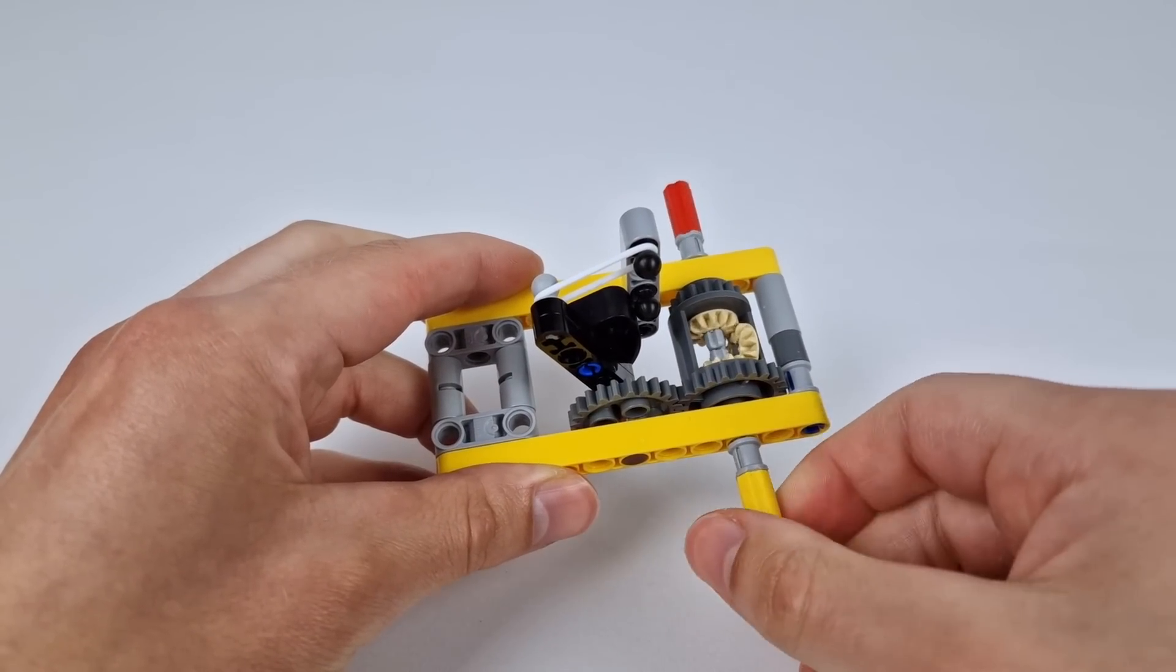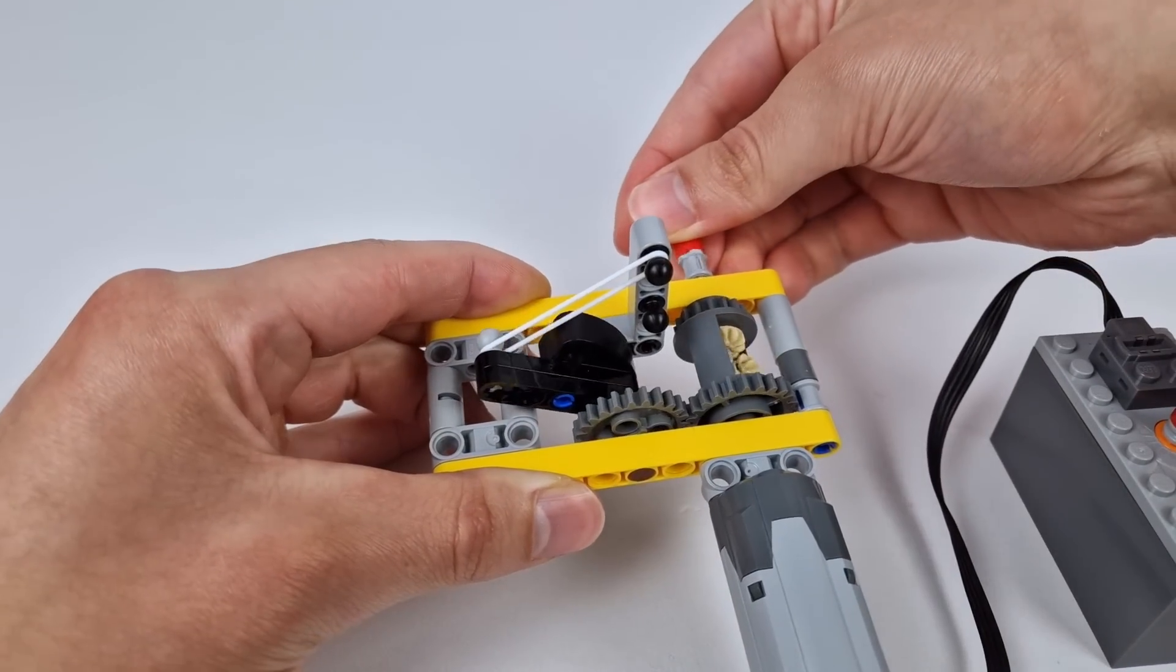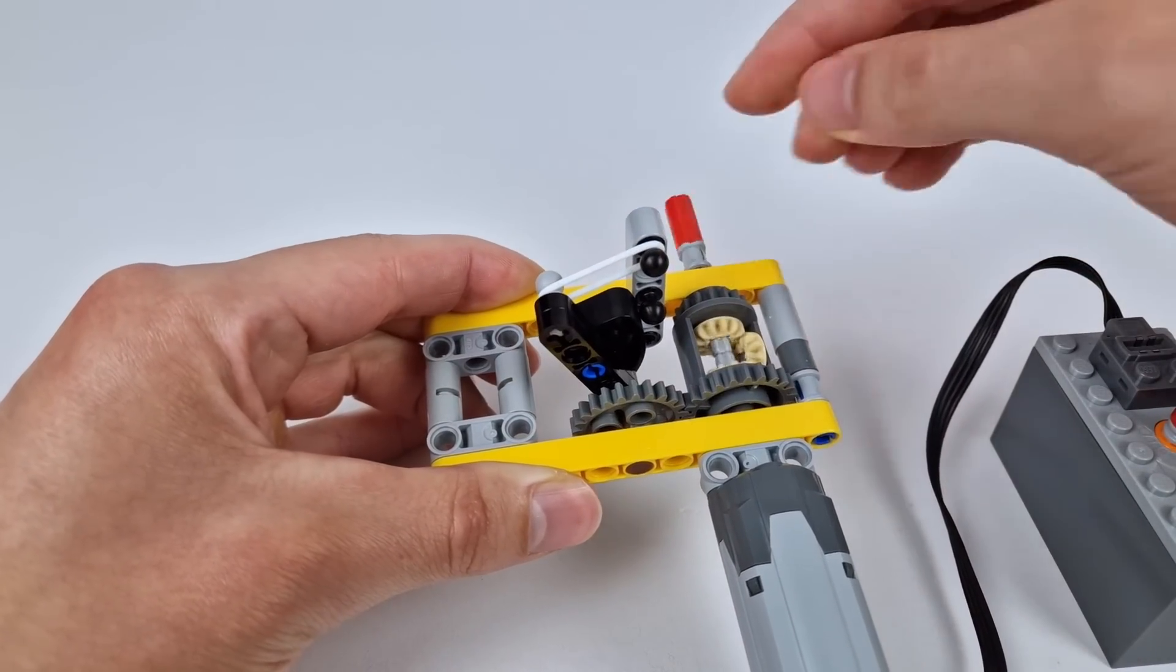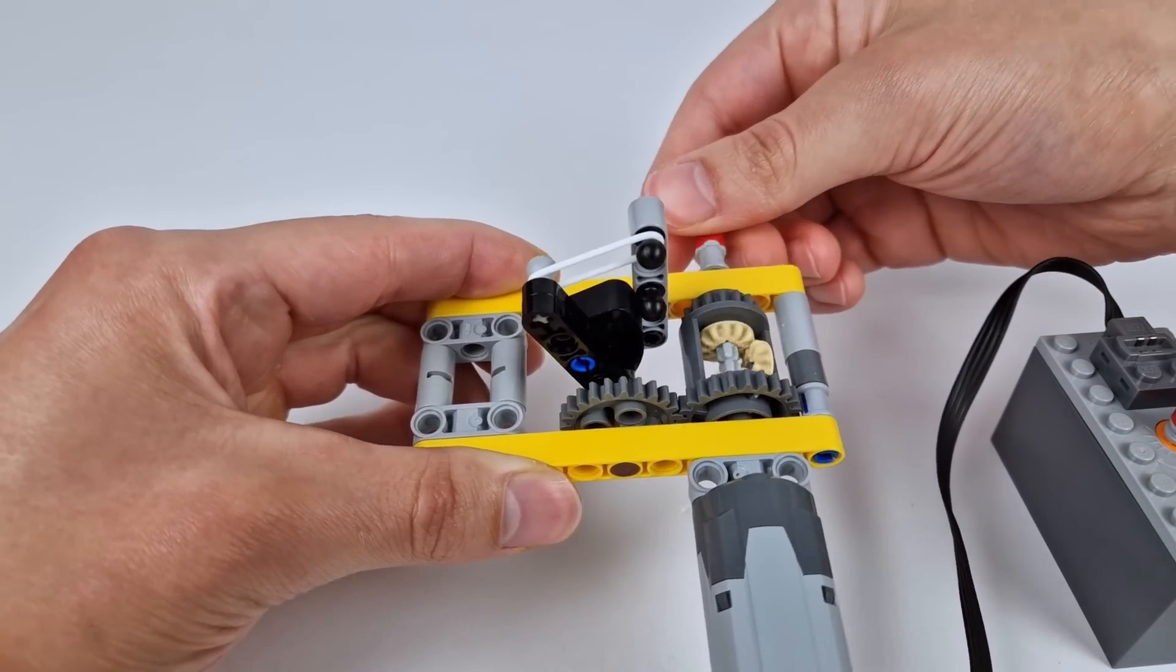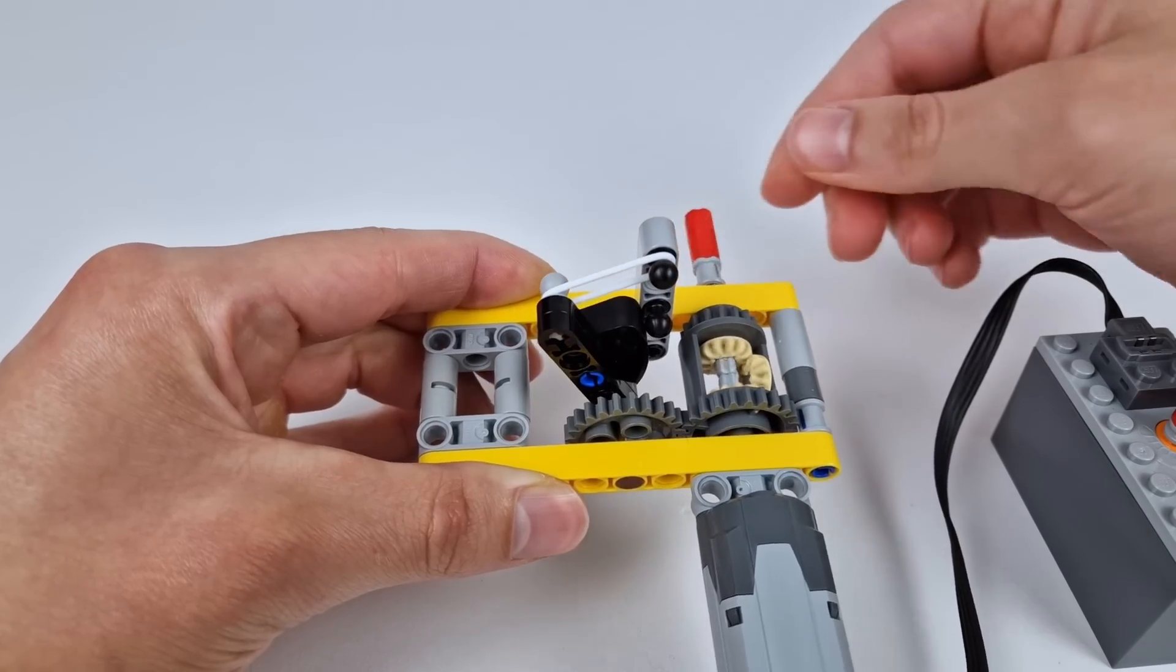If there's no resistive torque along the shaft, it spins freely, but if I apply some resistance to the other end, the differential housing also tries to rotate, which stretches the rubber band further the harder I try to stop the output, which indicates that there's more torque being transferred through the mechanism.